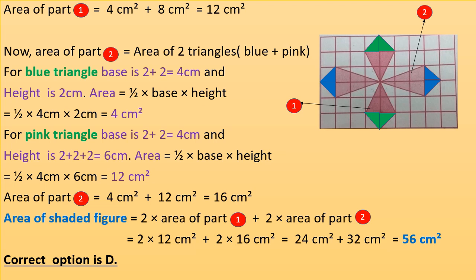For the pink triangle, base is 2 plus 2 equals 4 cm (two squares along the base) and height is 2 plus 2 plus 2 equals 6 cm (three squares along the height). Area equals half times 4 cm times 6 cm equals 12 cm squared. So area of part two equals 4 cm squared plus 12 cm squared equals 16 cm squared.